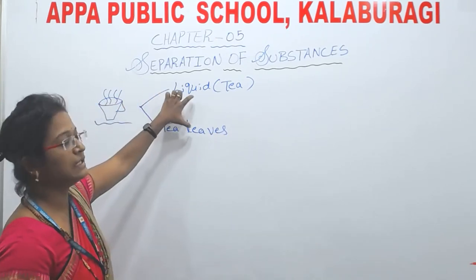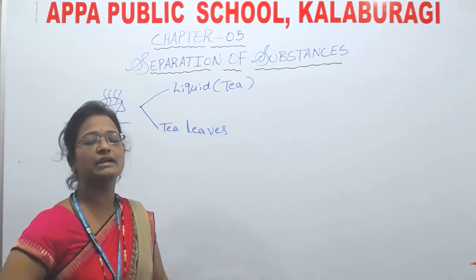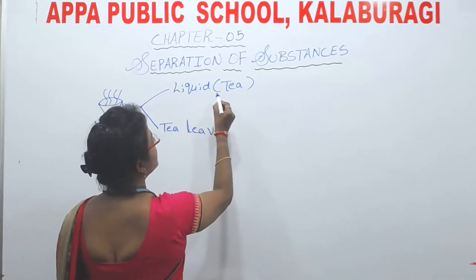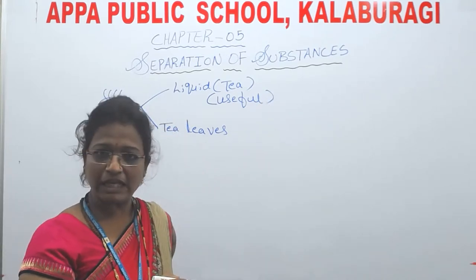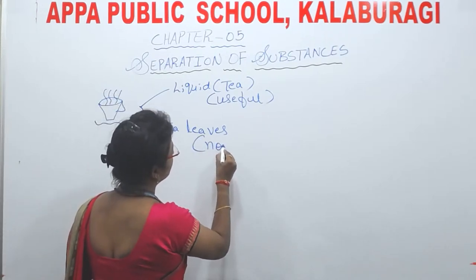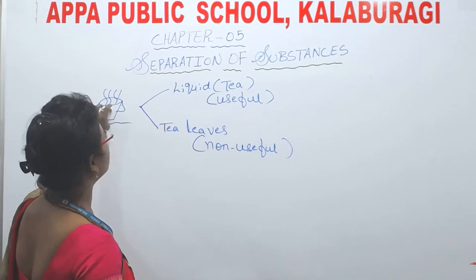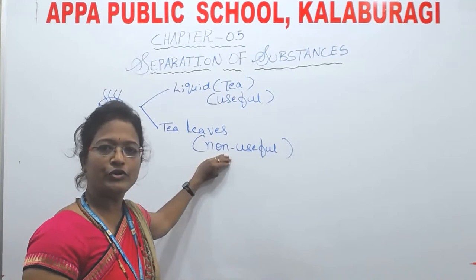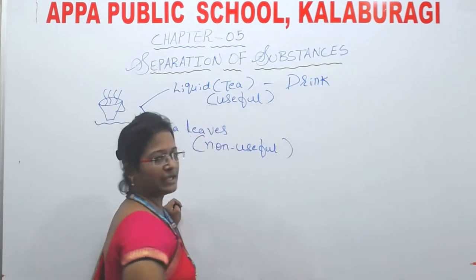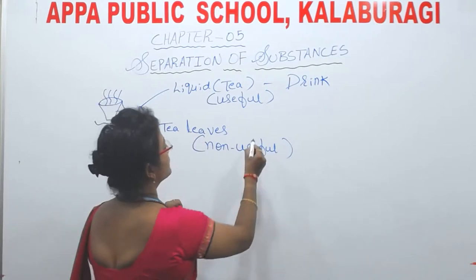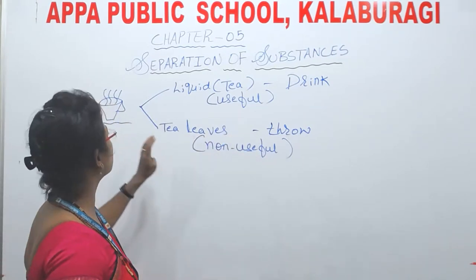From the tea, we get two components: the liquid tea, and the tea leaves. Which is the useful component and which is the non-useful component? The liquid tea which we drink is useful, and the tea leaves are non-useful — we throw them away. So this is the example of separation using tea.